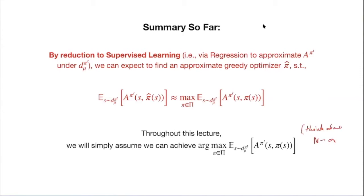In the infinite-data limit we can safely say we achieve the exact argmax — finding a policy that maximizes local advantage. We will not worry about the approximation error from supervised learning in the rest of the lecture, since we want to focus on policy improvement. You can easily inject the regression approximation error into the bounds we derive, but for simplicity we assume a perfect greedy policy selector.